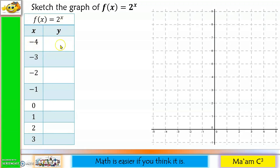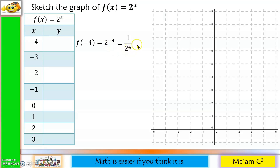Let's start with negative 4. So f(-4) = 2 raised to negative 4. With a negative exponent, we bring the expression down to make it positive: 2 raised to 4 is 16, so we have 1 over 16. We then plot the point at negative 4, 1 over 16.